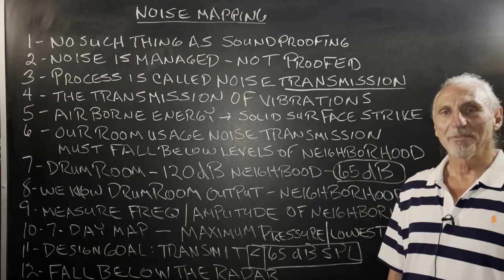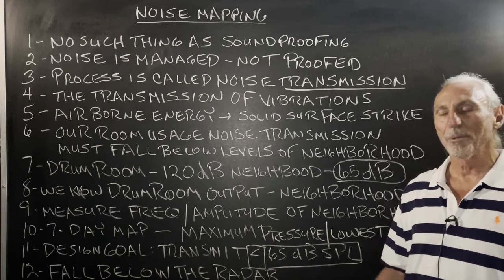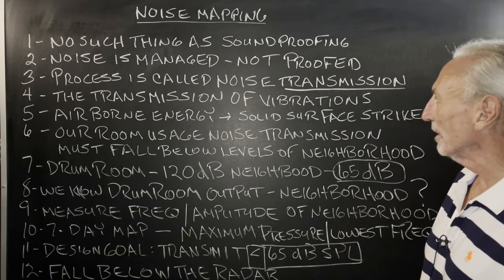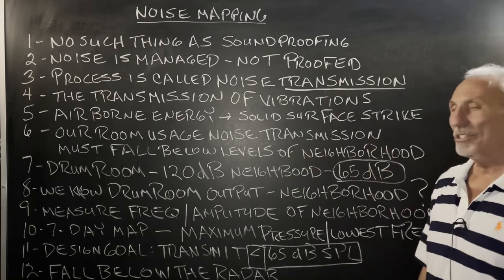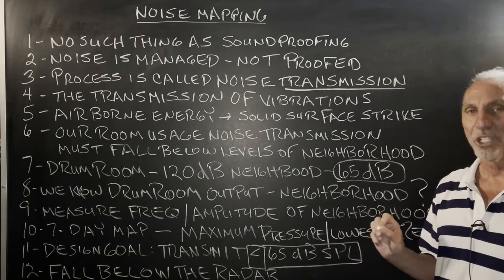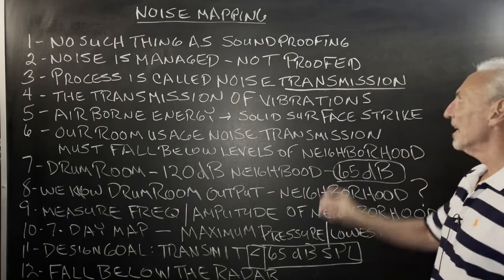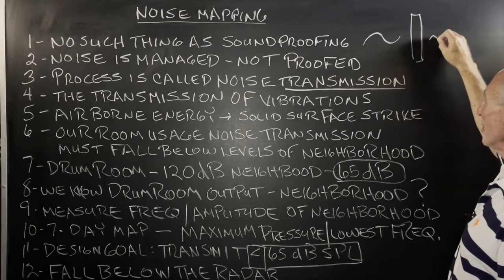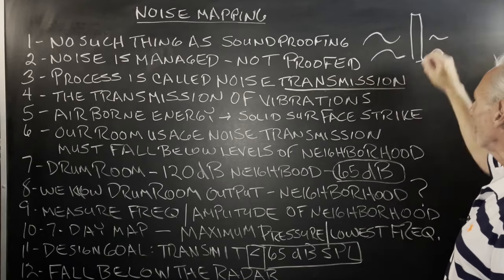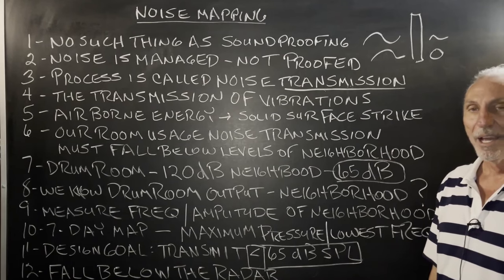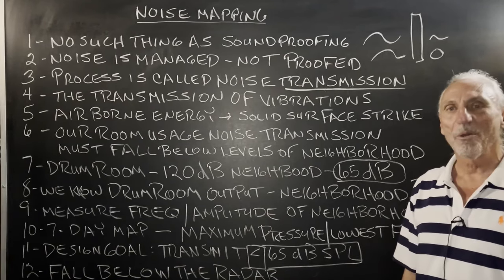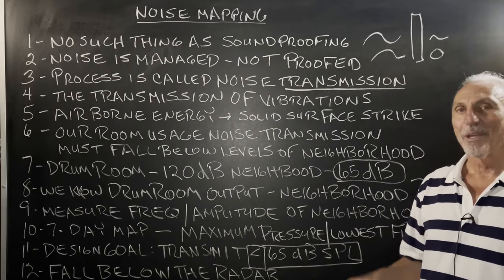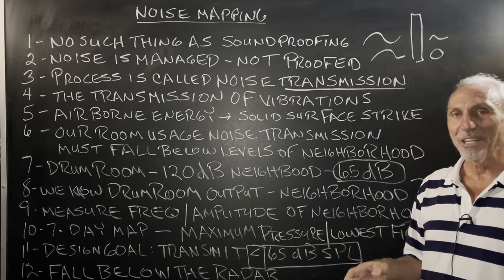It's just a big waste of time. We have to undo all of this before we can even get people to understand the truth. So let's try another approach here. Nothing is proofed. The process is called noise transmission. Focus on this word transmission. It's airborne energy striking a wall and then getting reduced. There's no this and zero — it doesn't happen. I built structures my whole life and there's no such thing as proofing.